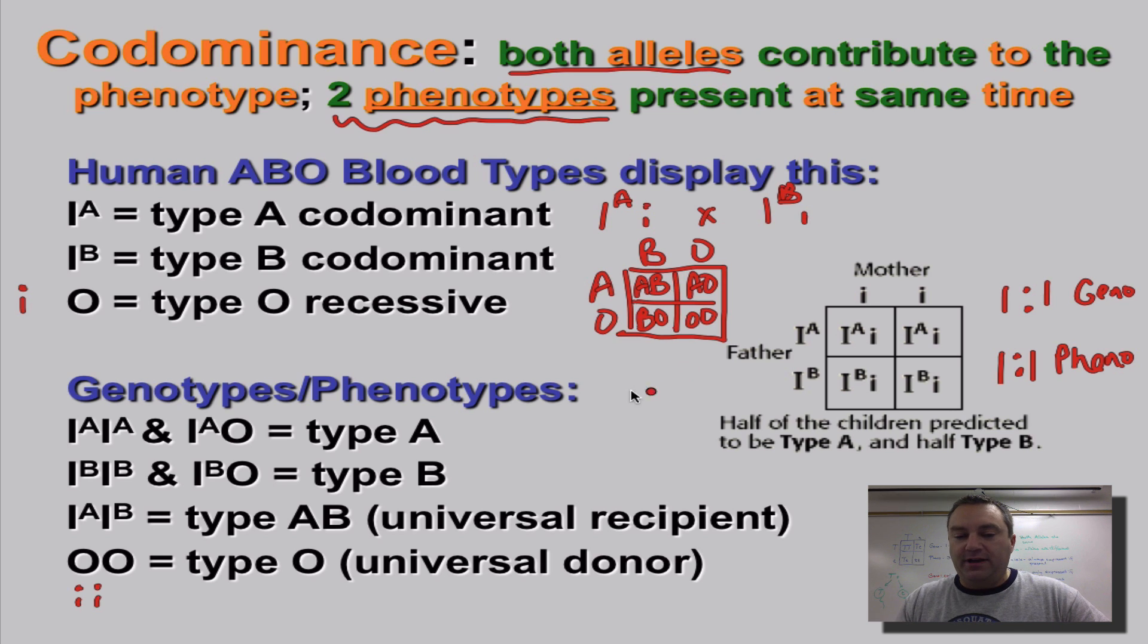So in this case, we can get all four of the blood types. So we have a phenotype ratio. We've got one that's AB. We've got one that's type A. We've got one that's type B, and we have one individual that's type O. And then genotype ratio, in this case, would be the same. One person has AB alleles. One person is AO. Another person is BO. Another person is OO. So here's an example of how you can do a codominance Punnett square problem.